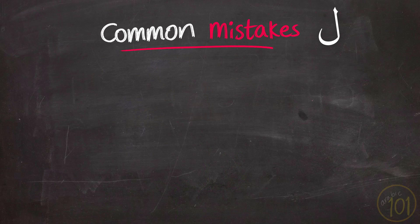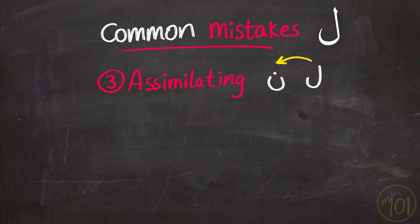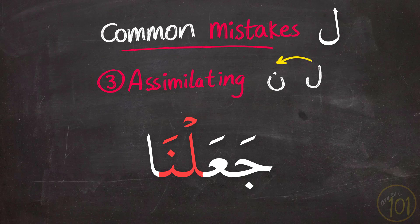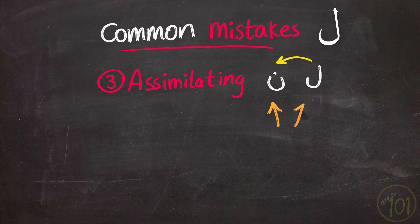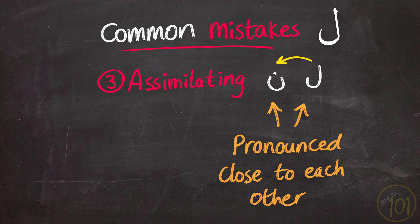The third mistake is assimilating the Laam into Noon. This happens when Laam is followed by Noon — for example, 'Ja'anna' and 'Anzanna'. This occurs because Laam and Noon are pronounced from two spots that are very close to each other. You should clearly pronounce the Laam with Iẓhār before moving on to the Noon.